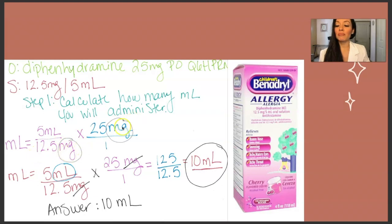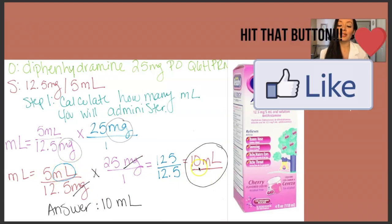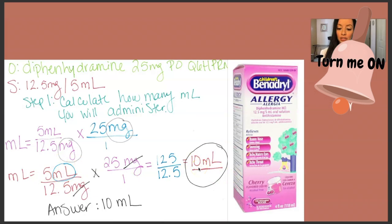We have milligrams here. We need to put milligrams at the top so that we can cross it out. So then you multiply across. 5 times 25 is 125 divided by 12.5. Your answer is 10 and the only unit of measurement that is left over is milliliters. So your answer is 10 milliliters.